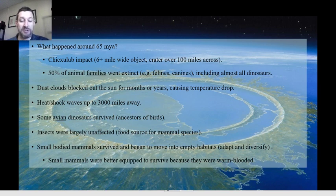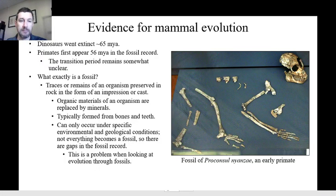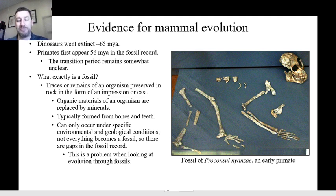Mammals were better equipped to survive because they were warm-blooded and didn't rely completely on the sun for warmth. The first primates begin to appear around 56 million years ago — so dinosaurs go extinct 65 million years ago and primates appear 56 million years ago — and we're not really sure too much about the process of evolving from those small tree shrew-like animals to primates.